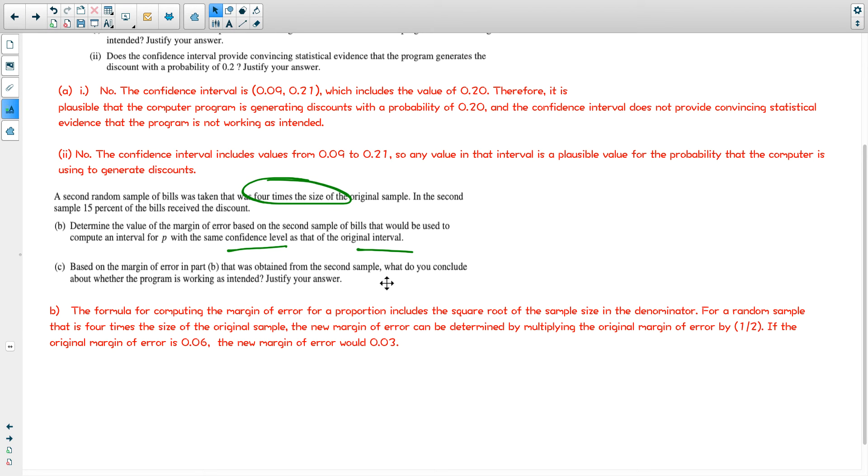Now part C, based on the margin of error in B, what do you conclude about the program? Well, let's work some things out here. The new margin of error, they said that the sample proportion was still 15%. So we know that P hat was, let's do part C here. P hat equals 0.15. That's the middle of it. And then you need to add and subtract the margin of error, so that's going to be plus or minus 0.03. That'll give us our confidence interval. So our confidence interval, now that our sample size is larger, is going to be from 12 to 18%. So that is what we believe the true proportion of customers that are receiving a discount is. It's between 12 and 18%.